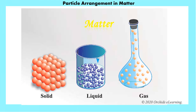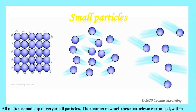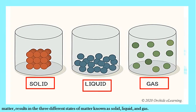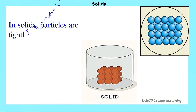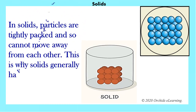Let us learn more about solids, liquids, and gases, and their particle arrangement. Any substance that has mass and occupies space is called matter. All matter is made up of very small particles. The manner in which these particles are arranged within matter results in the three different states of matter: solid, liquid, and gas. In solids, the particles are tightly packed and cannot move away from each other, which is why solids generally have a fixed shape.